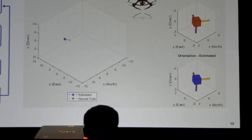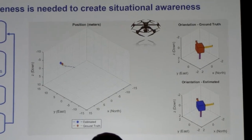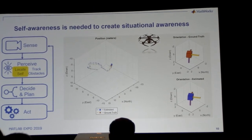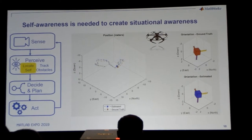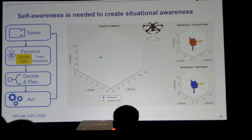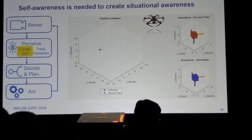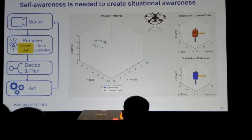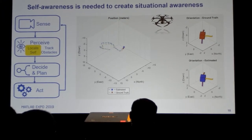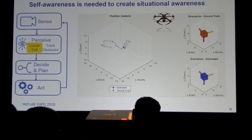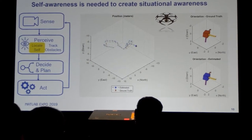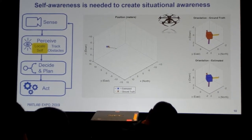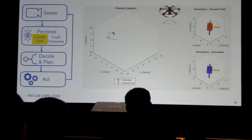Self-awareness is important in the bigger picture because you can't understand situational awareness unless you understand the platform's self-awareness. In this case, we're taking data from a quadcopter after it's flown, downloading the data in MATLAB and simulating — using that as the ground truth to feed our sensor models and generate the scenario. What you see on the top is the ground truth, and the bottom is the estimated using the fusion algorithms. We have sensor models to generate data as if it came from the flying quadcopter, as well as the algorithms used to fuse that data.